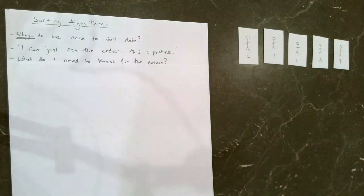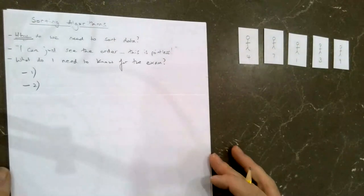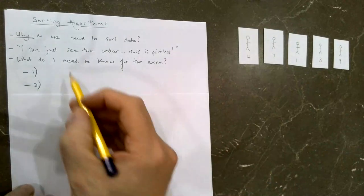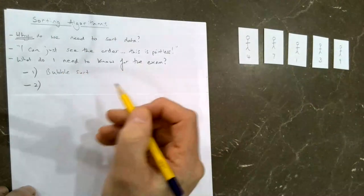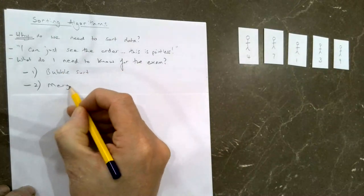What way, you might ask? And that brings me to this next question. What do I need to know for the exam? You need to know two different ways of sorting data. The first way is bubble sort, and the second way is called merge sort.